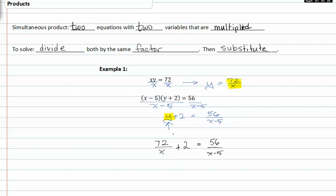This gives me seventy-two over x plus two is equal to fifty-six over x minus five. As you can see, I've now gotten rid of all my y's, everything is in terms of x now. My LCD is now x times x minus five.